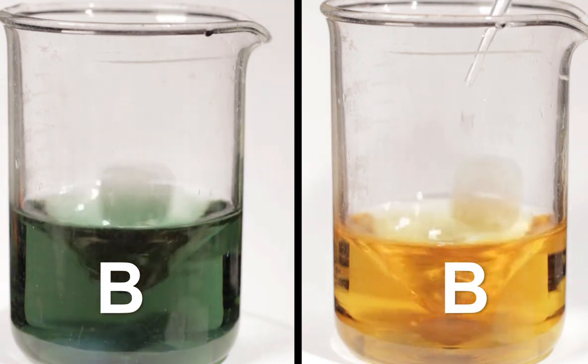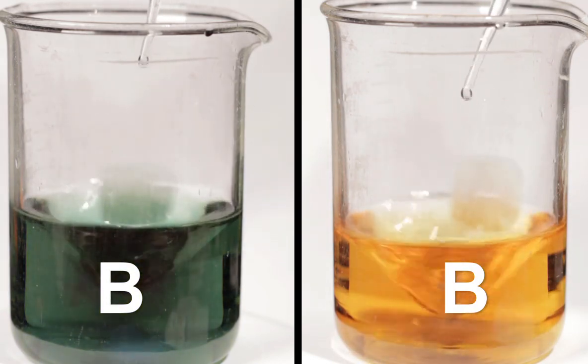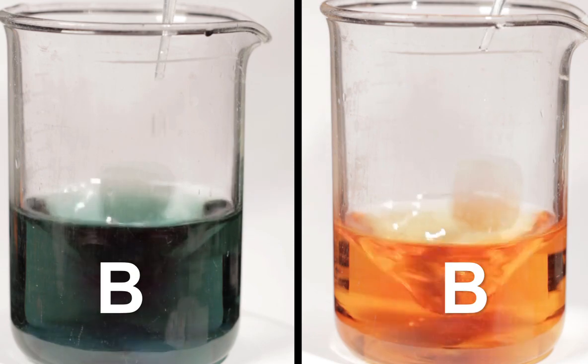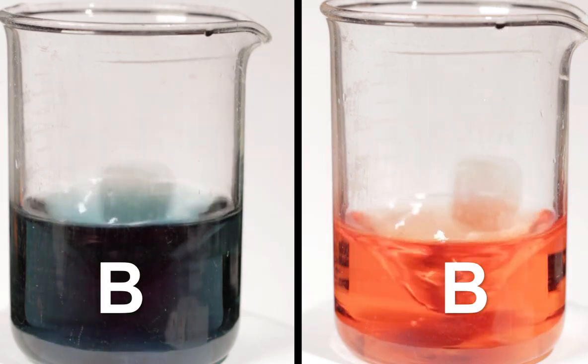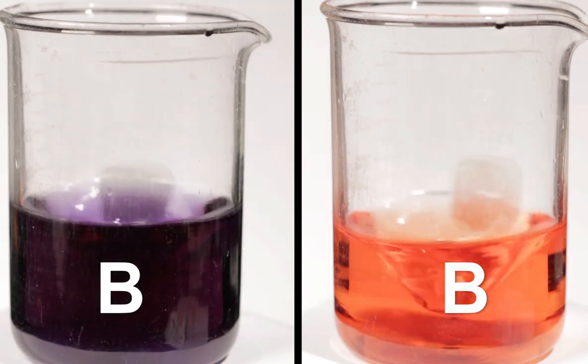It takes much more acid or base to change the pH of this solution by the same amount. Now, how is solution B able to resist changes to its pH when strong acids or bases are added? How could we make and use such a solution? In this video, you'll find out.